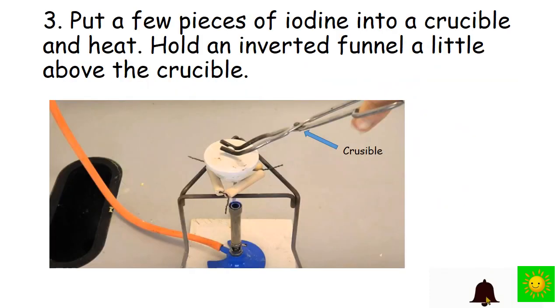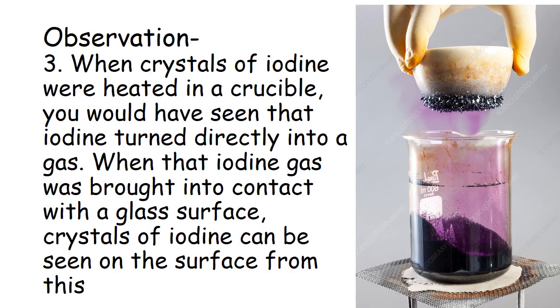In the third part of the practical we have to put a few pieces of iodine into a crucible and heat it. Hold and invert the funnel a little above the crucible. We have to observe.